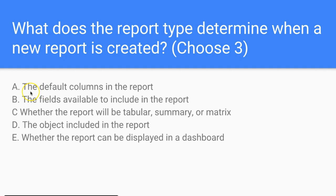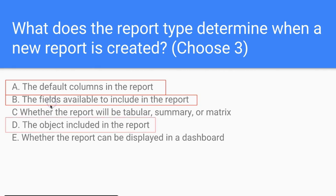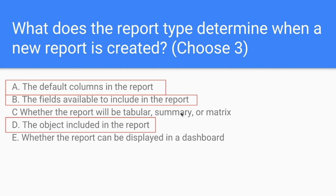The report type determines the kind of fields we will see. It will not determine whether it's a summary or matrix. The correct answers are A — the default columns, B — the fields available, and D — the object included. Whether a report can be displayed in a dashboard comes down to whether it's a table, summary, or matrix, which applies to all report types. The report type is about the object — the bucket we're in — which tells us the default columns, the fields, and the object.